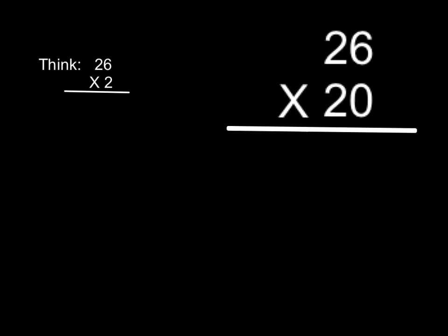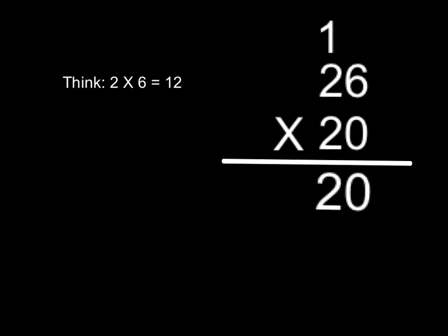The shortcut here is: don't start multiplying by zero. Just think of this whole problem as 26 times 2. We're going to completely ignore that zero when we're multiplying, but we can't ignore it in the answer. So before we do any multiplying, we'll write the zero down here, because we're really going to be multiplying 26 times 20, not just 2. Multiplying by multiples of 20 and other numbers could be difficult in our heads, so we're going to forget about the zero when we multiply.